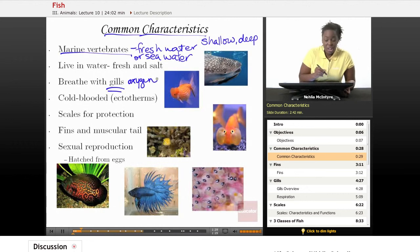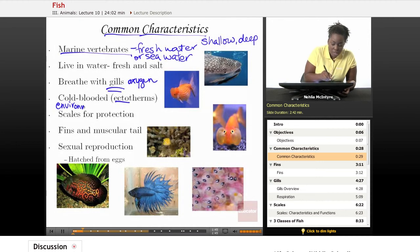All fish are what we call ectotherms. Ectotherms are cold-blooded animals, which basically means that they can't maintain their own temperature. Whatever the temperature of their environment is, it determines their own body temperature.